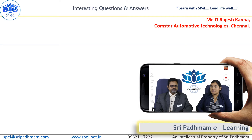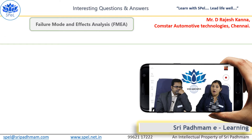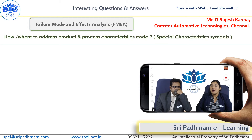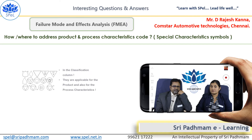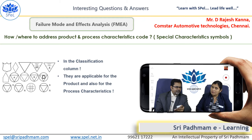Same question — he has a question on FMEA. His question is: how to address product and process characteristics codes, that is special characteristics symbols? In FMEA, let it be a process FMEA or design FMEA, these codes or symbols must be addressed in the classification column.